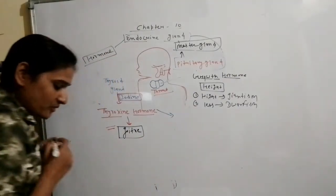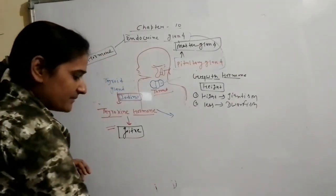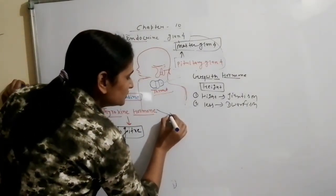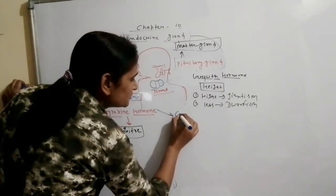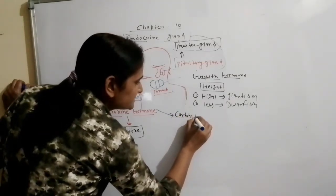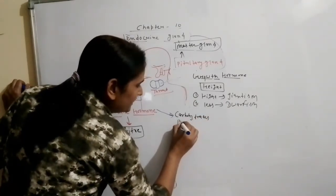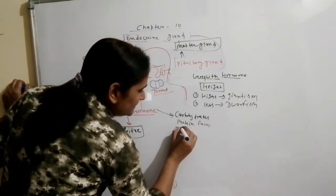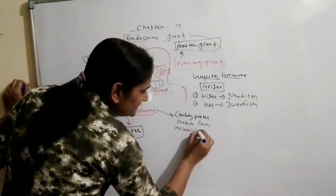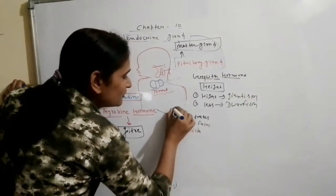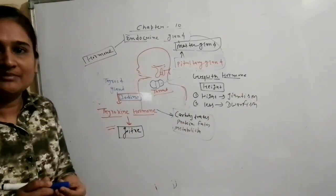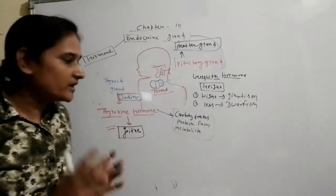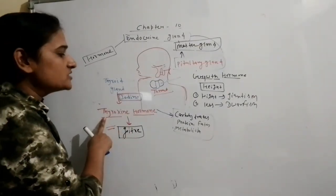The thyroxine hormone regulates important functions in our body — it controls the metabolism of carbohydrates, proteins, and fats. When food is digested, it is converted to energy. Thyroxine hormone regulates this metabolic process.